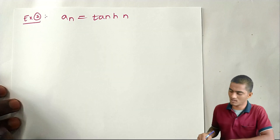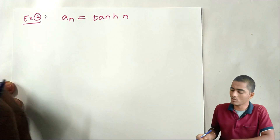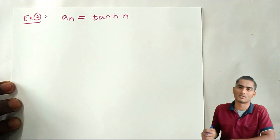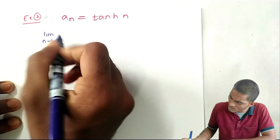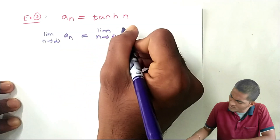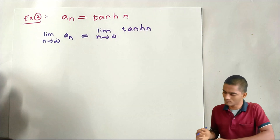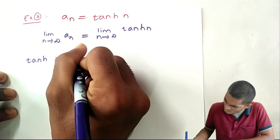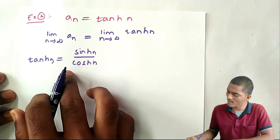Next example: a_n = tanh(n). Here we have the nth term of the sequence a_n equal to tanh(n). We want to find the nature of this sequence. Applying the limit to this nth term: limit as n tends to infinity of tanh(n). First, convert tanh(n) into simple form: tanh(n) = sinh(n) / cosh(n).